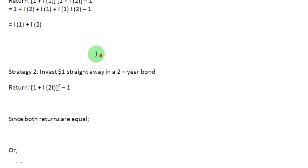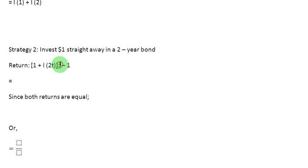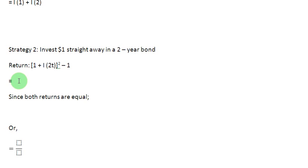Now let me focus my attention on strategy number 2, which is to invest $1 straight away in a two-year bond, and that gives me this return. Let me now simplify this term. If I forget this minus 1 for a moment and just focus my attention on this item here, I will realize that this is in the format of (A+B) whole squared. So just like we open the (A+B)² formula, we can open it up in the same way. So 1 squared is going to give me a 1, and then I am going to put a plus sign and then I am going to square up the second term, that is I2T.